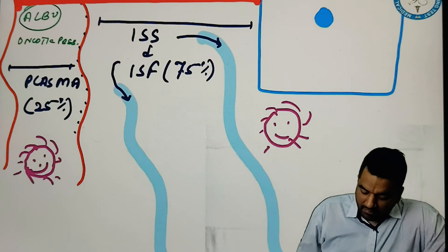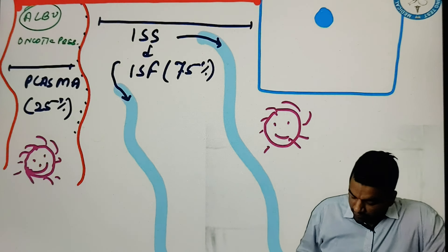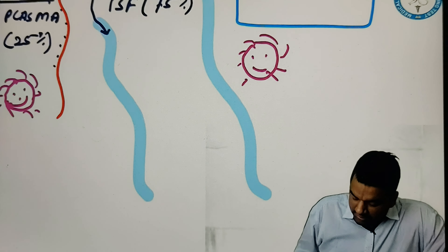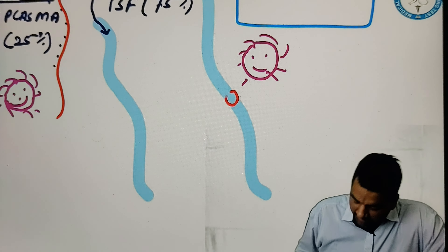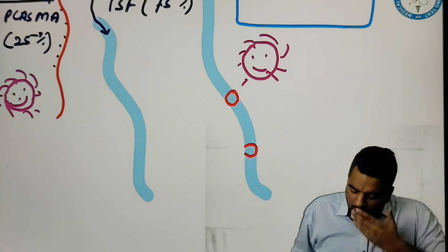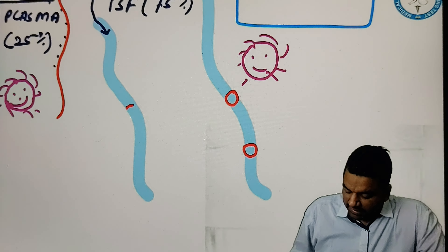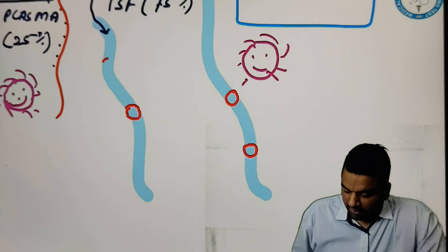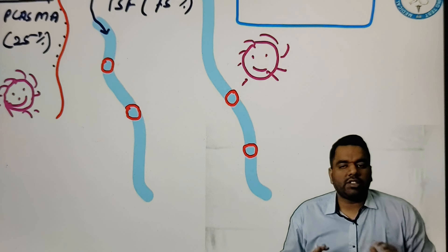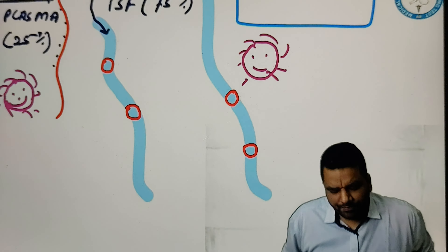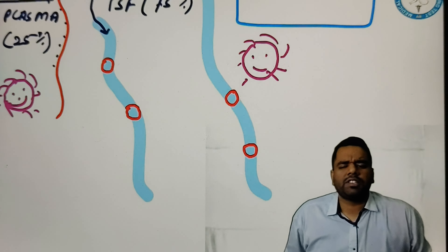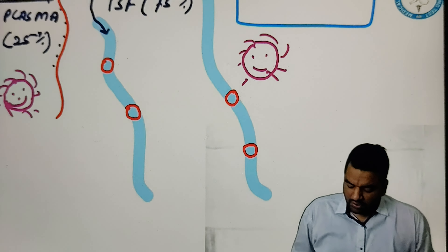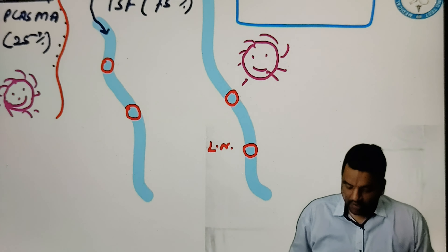So what would happen if this bacteria enters into this lymphatic vessel? In the lymphatic vessel there is no cell. So how can this bacteria be removed? Because we always want to maintain sterility inside the body. So what God did? God basically put some group of cells at these points. And these groups of cells we called as nodes, which are projected to the lymphatic vessel.